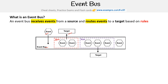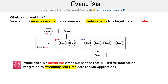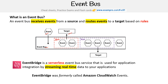AWS has a high-level event bus offering called EventBridge. It's a service event bus used for application integration by streaming real-time data to your applications. The service was formerly known as Amazon CloudWatch Events — it was renamed to give users a better opportunity to discover it, and its capabilities were also extended.